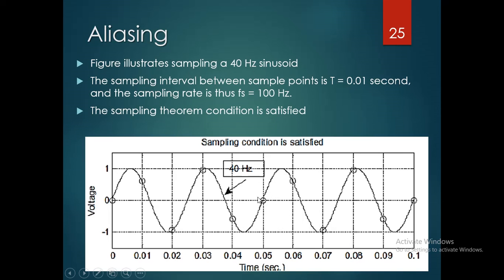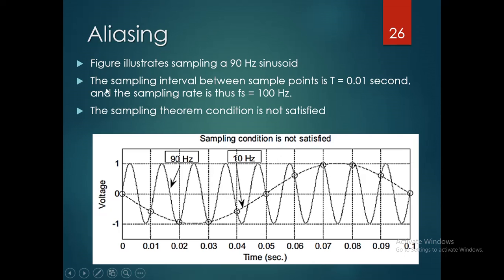If we observe this figure, it is a 40 hertz sinusoidal signal. The sampling interval shown here is 0.01 seconds and the sampling frequency is about 100 hertz. The next figure is a 90 hertz sinusoidal signal. Here also, the time period is 0.01 seconds and the sampling rate is about 100 hertz.